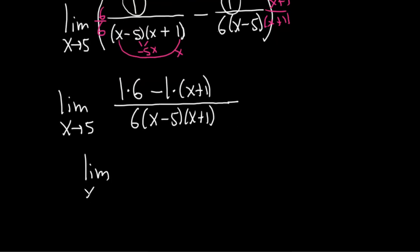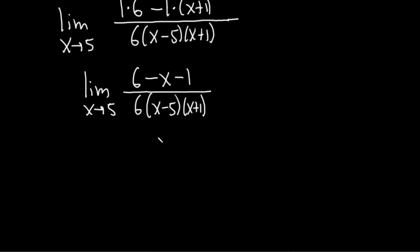This is the limit as x approaches 5 of 6. Negative 1 times x is negative x, and then negative 1 times 1 is negative 1, over 6 parentheses x minus 5, x plus 1. Let's keep going. This is the limit as x approaches 5. 6 minus 1 is 5, and then we have the minus x here. So minus x, all over the stuff here on the bottom. So 6, x minus 5, x plus 1.